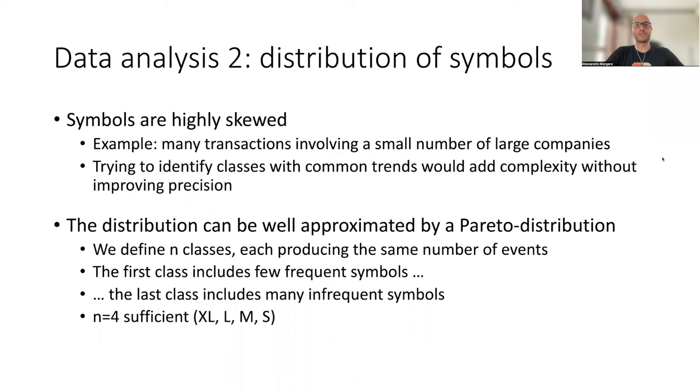In our workload generator, we define n classes, each producing the same number of events. Then we distribute symbols to classes. The first class includes few symbols that are very frequent. And then we increase the number of symbols, and we decrease the frequency until the very last class, which includes a lot of symbols that occur with very low frequency. So in practice, we noticed that for the data sets we had, we could achieve a very good approximation already with four classes. So you can think of it as having an extra large class of symbols, so few symbols that are very frequent, down to the small class, where there are many symbols that are very infrequent.